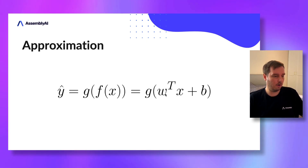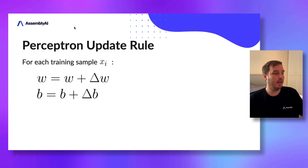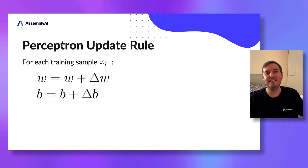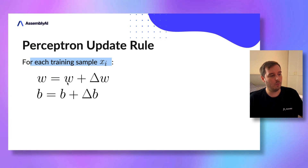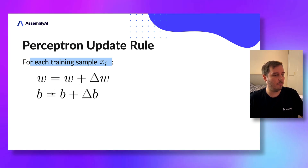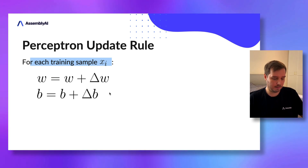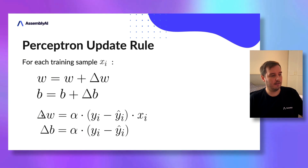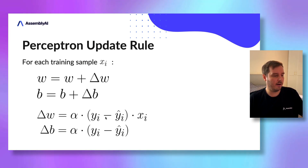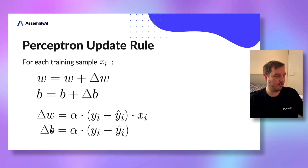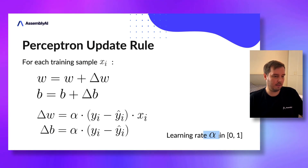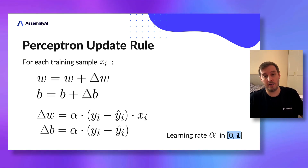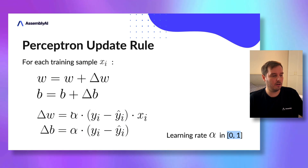Now we need to learn the weights w and the bias b, and we do this with the perceptron update rule — a very intuitive rule. For each training sample x_i, we update the weights: weights plus delta_w, and the bias plus delta_bias. Delta_w equals alpha times (y_i minus y_hat_i) times x_i, and delta_bias is the same except without the x_i term. Alpha is the learning rate, between 0 and 1, which decides how far we go in that direction.